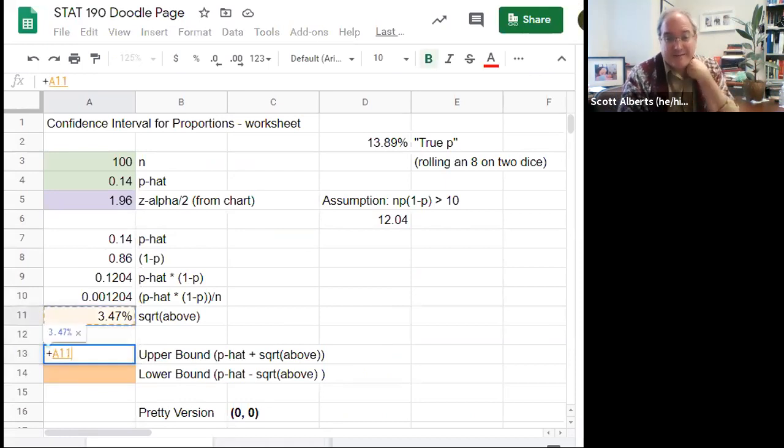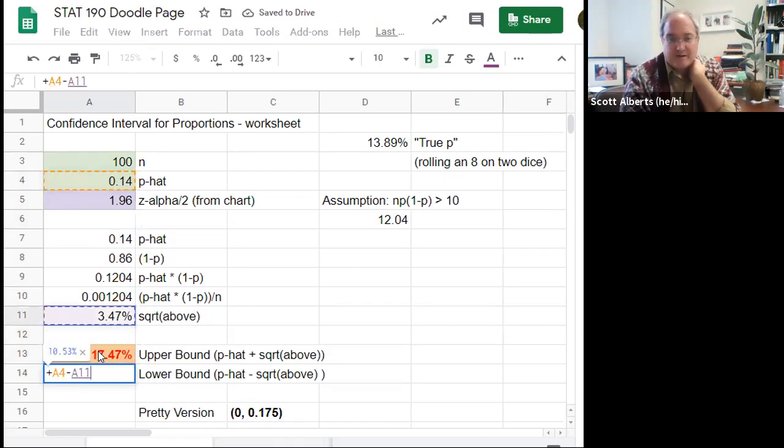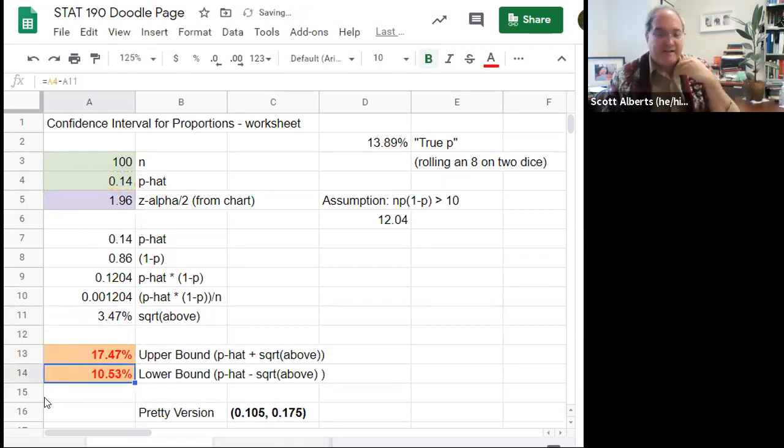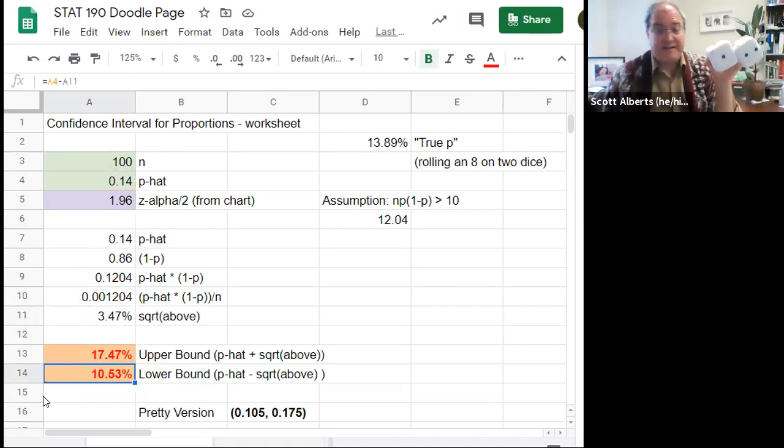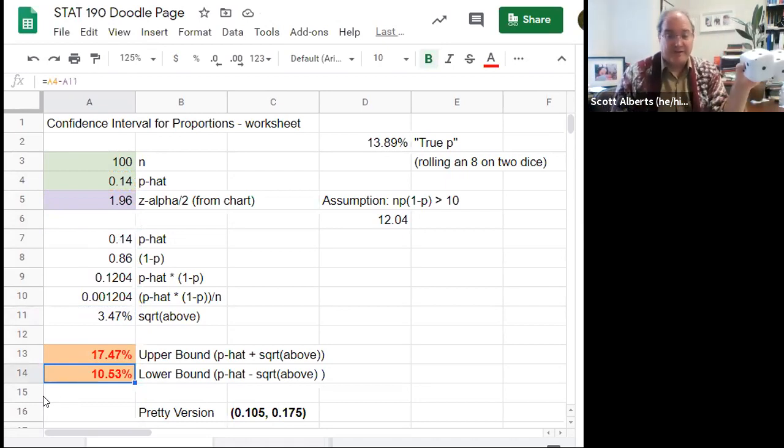To do the last step, what we're going to do is take our point estimate plus or minus this amount. This is our standard error. This is our margin of error. And then the whole thing is our confidence interval. Standard error times that z score is going to be our margin of error. And then the actual plus or minus thing is going to give us our actual confidence interval. So we're just going to take the 14% plus our margin of error and our p-hat minus our margin of error.